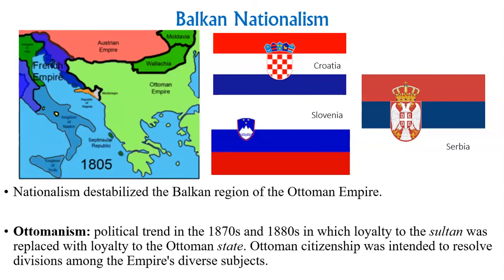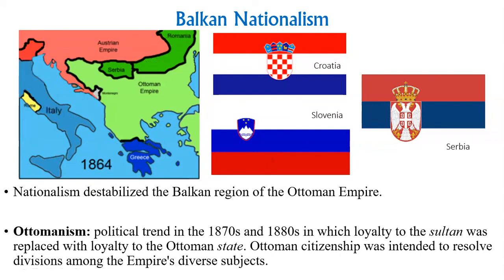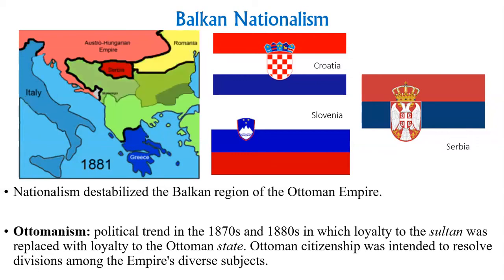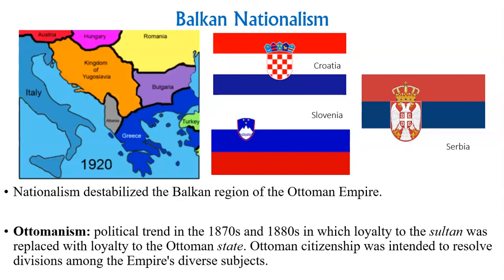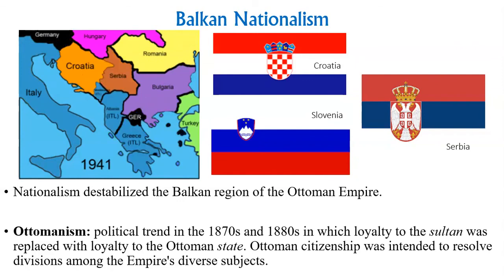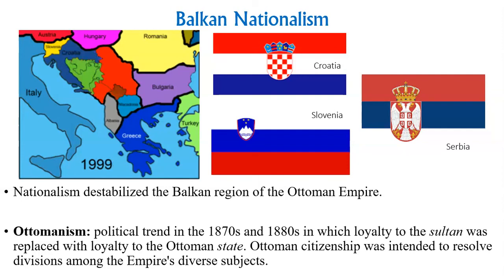The Ottoman Empire is struggling. The Balkan region of the empire is destabilized by nationalism — people are seeing what everyone else is doing and what they want for themselves. During the late 19th century, loyalty to the sultan waned in popularity, and it became more popular to be loyal to your state. They introduced the idea of Ottoman citizenship as a means to quiet the unrest so that diverse people would see themselves as members of a cohesive unit — though this was only going to last for so long.